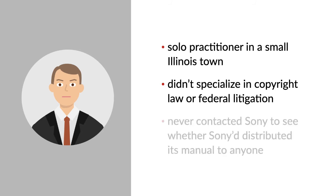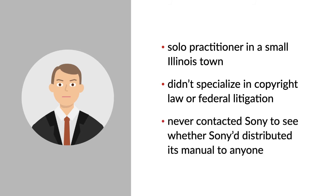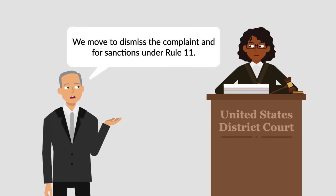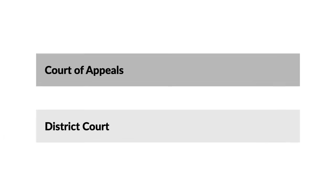Before filing the complaint, Guion never contacted Sony to see whether Sony distributed its manual to anyone. Sony moved to dismiss the complaint and for sanctions under Rule 11, seeking reimbursement of $47,000 in attorney's fees and expenses. The district court dismissed the action for failure to state a claim and awarded Sony $14,895.46 in sanctions against Guion based on Guion's failure to pursue the action effectively. Guion appealed the sanctions to the United States Court of Appeals for the Seventh Circuit.